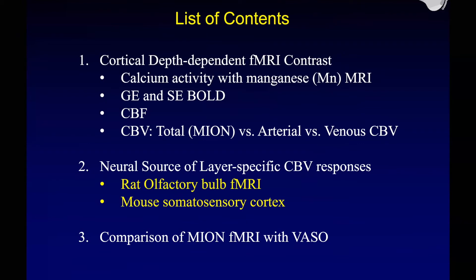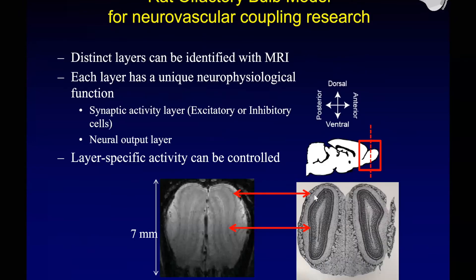So now we know that CBV is quite specific to layer four. We would like to know the neural source of the layer-specific fMRI signal. For this we used the rat olfactory bulb model system. We use this model because the cortical circuit is relatively simple, layers can be identified by MRI, and each layer has a unique neurophysiological function — certain layers have only synaptic activity and certain layers have only spiking activity. This is a unique model system we can utilize for neurovascular coupling research.